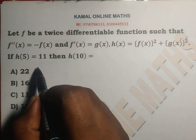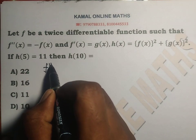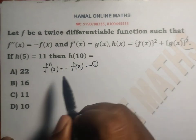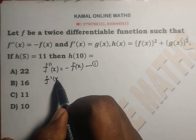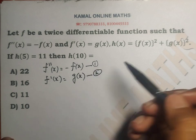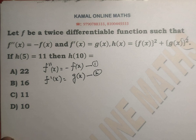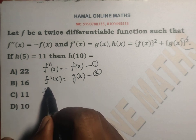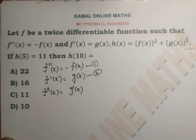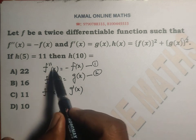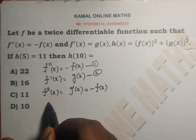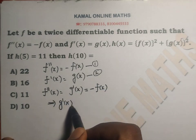f is a twice differentiable function. We know that f''(x) = -f(x). So differentiating f'(x) gives us f''(x) = g'(x). Given h(x) is equal to f(x)² + g(x)².